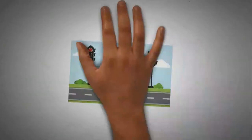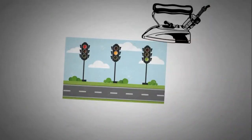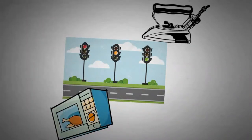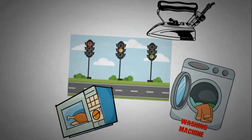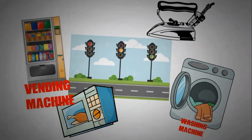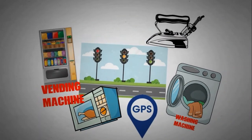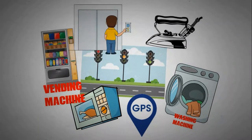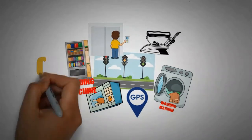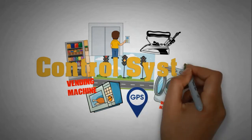What do you think the traffic lights, a pressing iron, a microwave oven, a washing machine, a vending machine, a GPS, and an elevator have in common? They all have a control system in them.